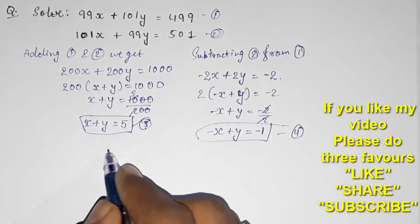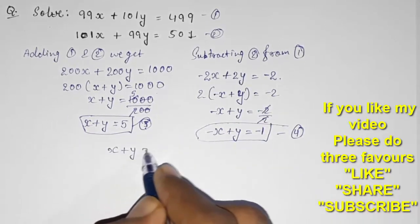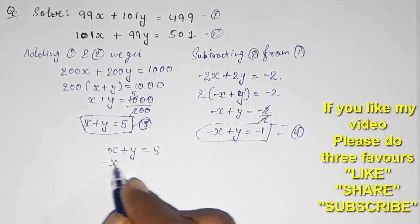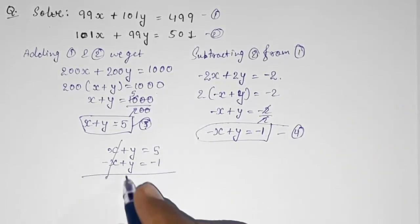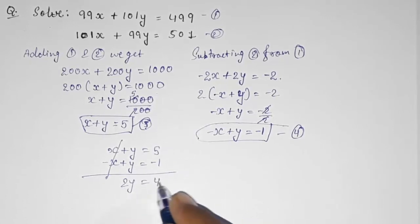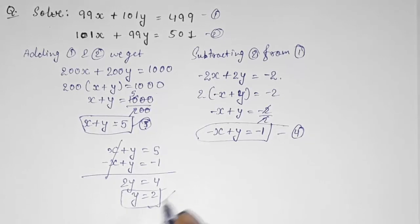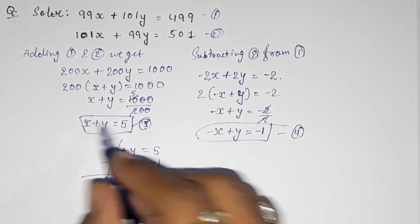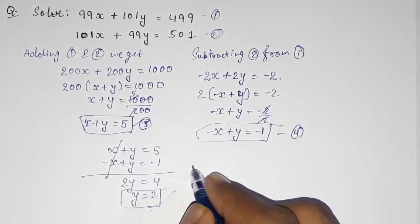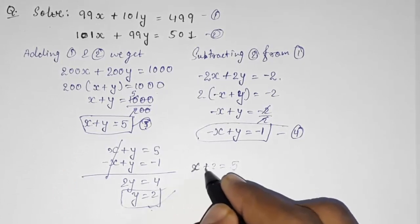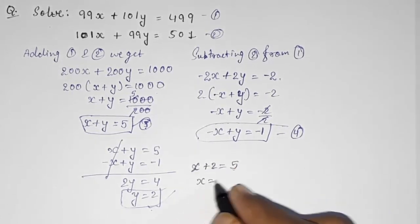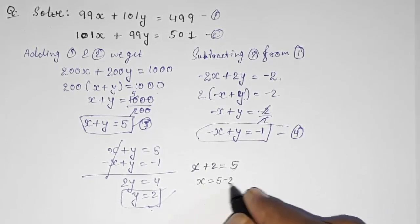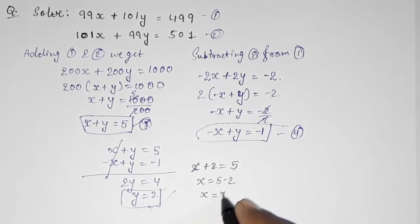We have shortened the equations by adding and subtracting. Now elimination is easy. Adding equation three (x + y = 5) and equation four (−x + y = −1), x cancels and we get 2y = 4, so y = 2. Substituting back: x + 2 = 5, so x = 3.